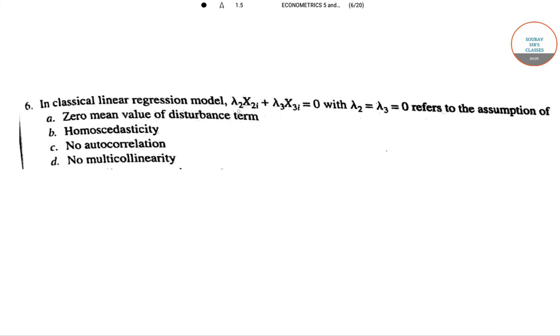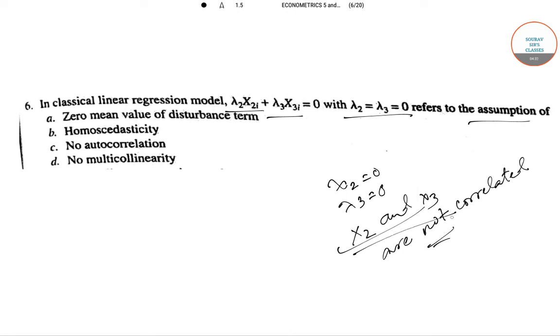Moving to the sixth question we have the classical linear regression model which has lambda2 x2 plus lambda3 x3 equal to 0 when lambda2 lambda3 equal to 0 refers to which assumption. Now when we put lambda2 equal to 0 and lambda3 equal to 0 that means x2 and x3 are not correlated. So there is no correlation between these two variables and this correlation among the variables is known as the problem of multicollinearity. The absence of multicollinearity is termed as no multicollinearity. So option d is the correct answer.